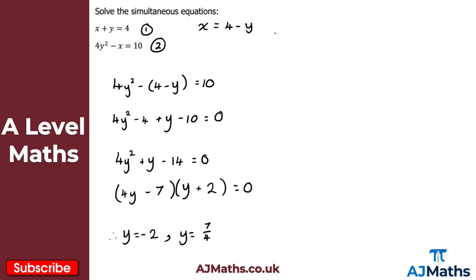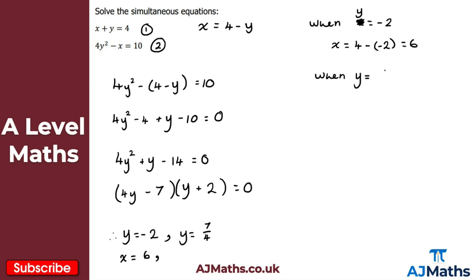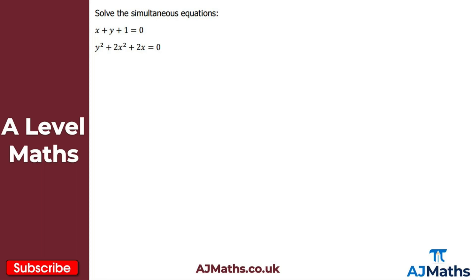Now I substitute back into the rearranged form x equals four minus y. When y equals minus two, x equals four minus (minus two), which is four plus two, giving x equals six. When y equals seven over four, x equals four minus seven over four, which is sixteen over four minus seven over four, giving x equals nine over four. So our two solutions are x equals six, y equals minus two and x equals nine over four, y equals seven over four.